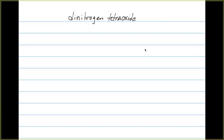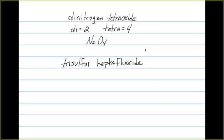Let's look at a couple more examples. Dinitrogen tetraoxide: we've got di representing 2, tetra representing 4, so we have N2O4 as our formula. Trisulfur heptafluoride: tri represents 3, hepta represents 7, so our formula is going to be S3F7.